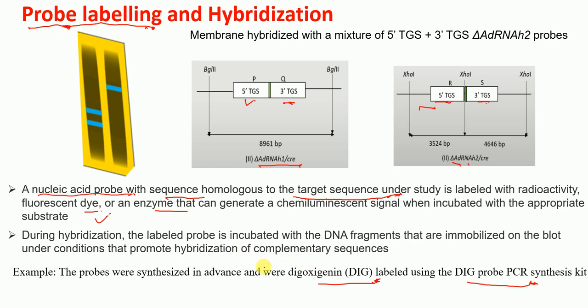Labeling is important because we want to visualize the probe later in the detection stage. Labeling can be of different types: radioactive, fluorescent, or enzymatic.